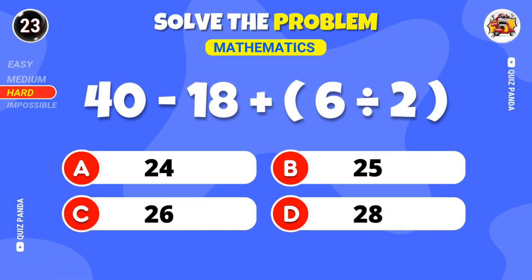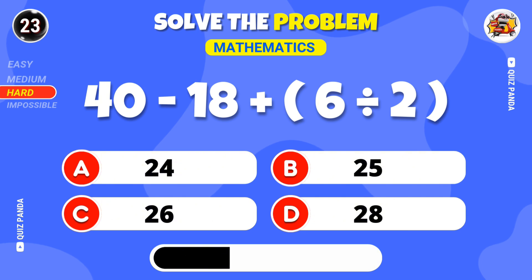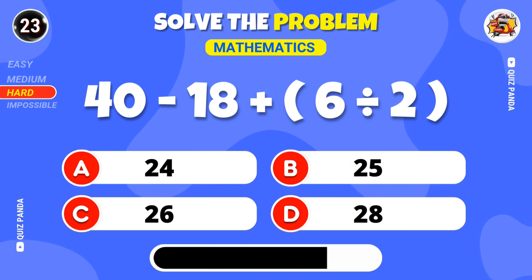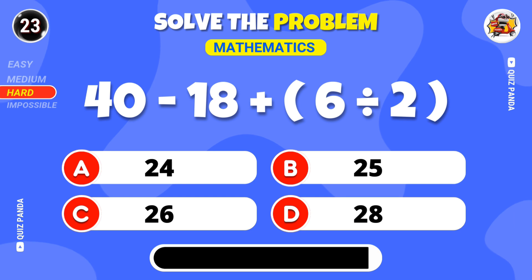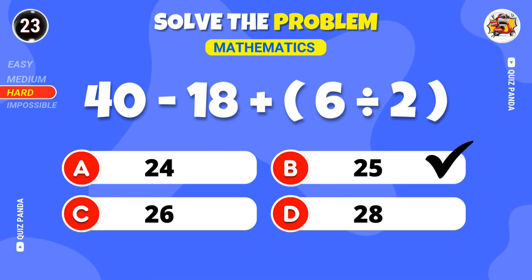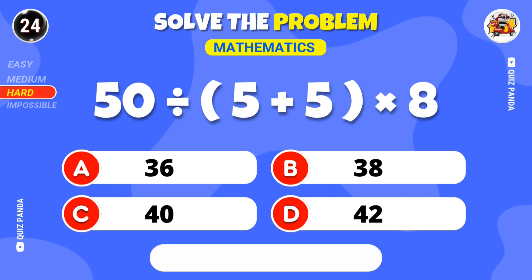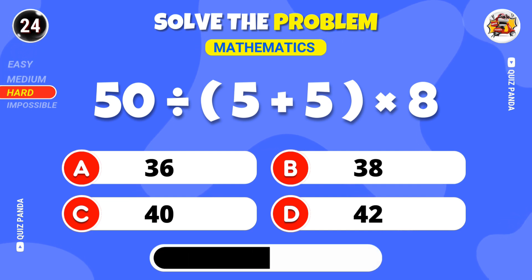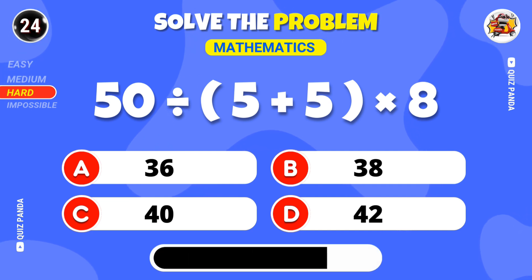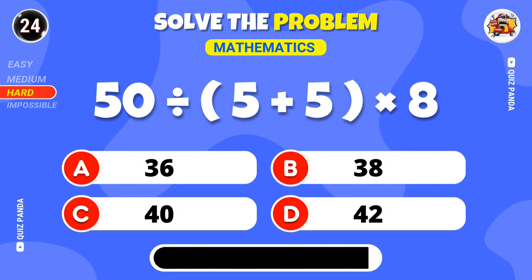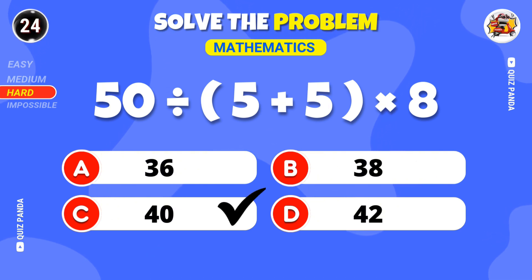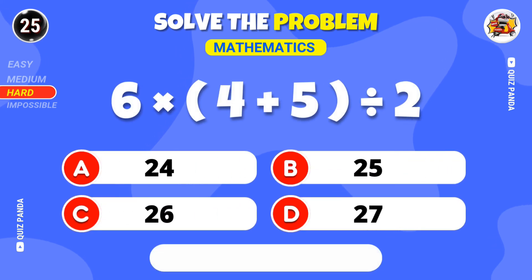How much is 40 minus 18 plus 6 divided by 2? Solve this quickly — 50 divided by 5 plus 5 times 8. Think fast — what's 6 times 4 plus 5 divided by 2?